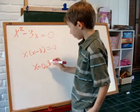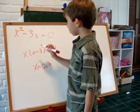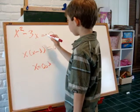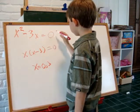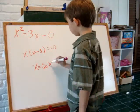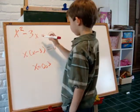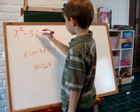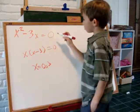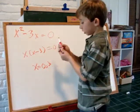Now we check our work. 0 squared is 0 minus 3 times 0 which is also 0 equals 0. And 3, 3 squared which is 9, and 3 times 3 which is also 9, subtracts to 0. So it checks out.